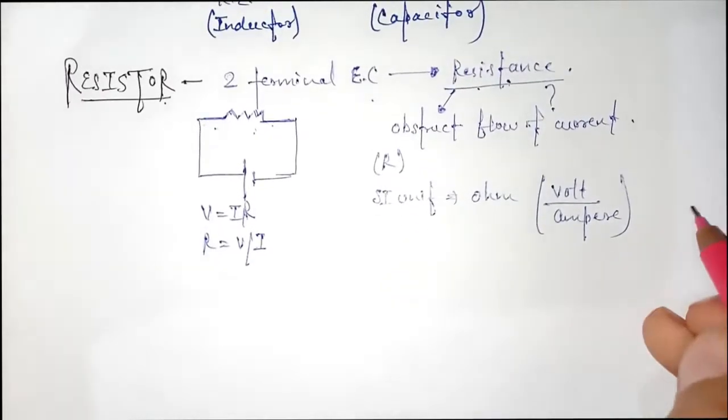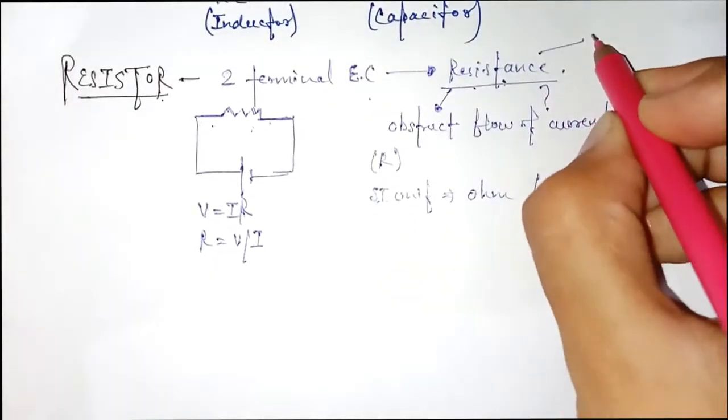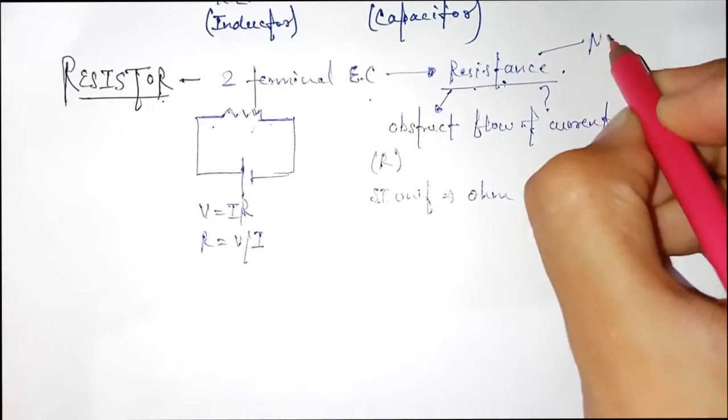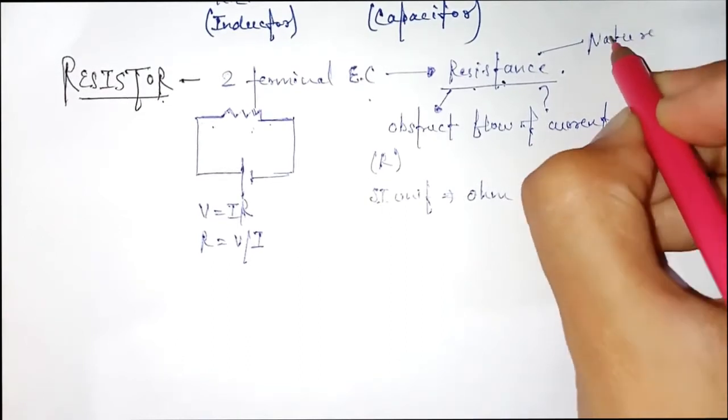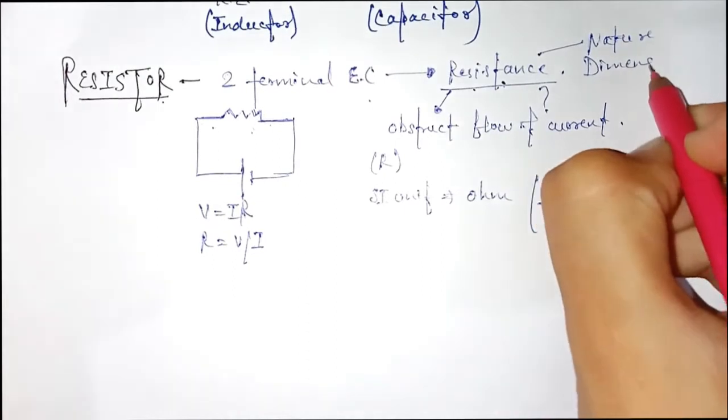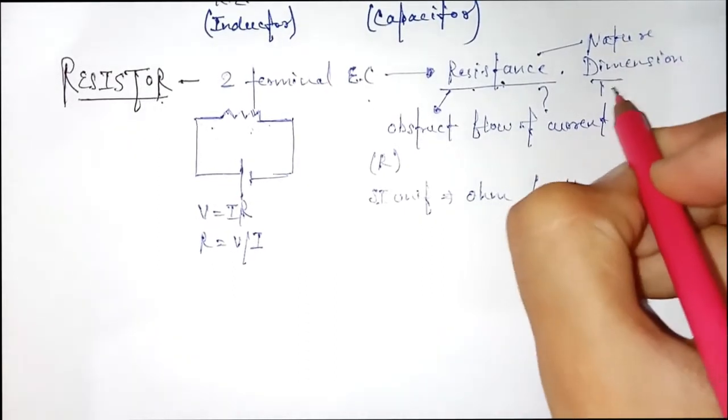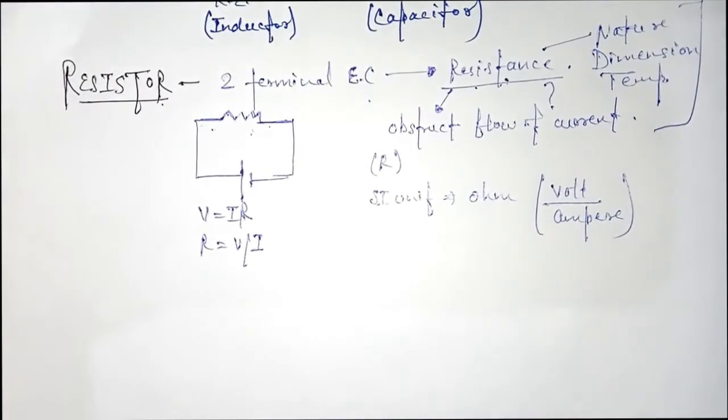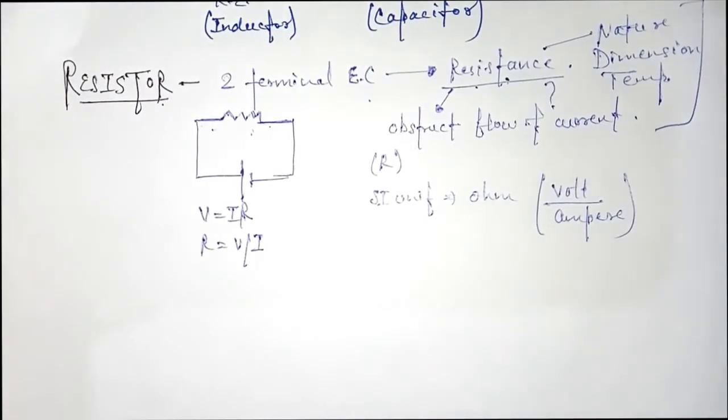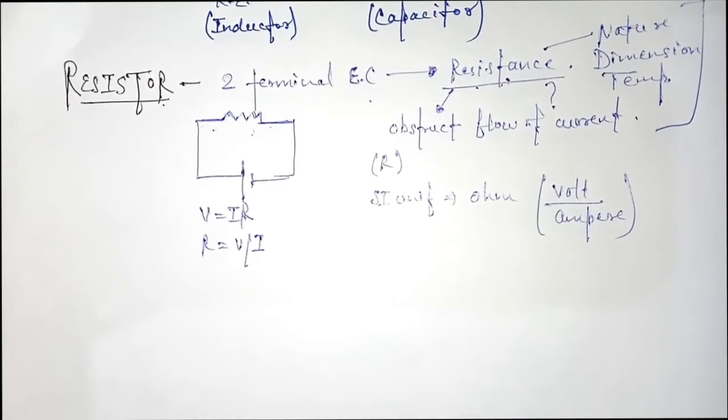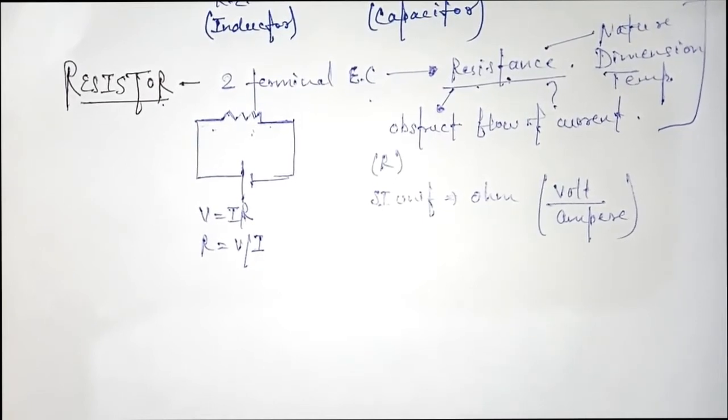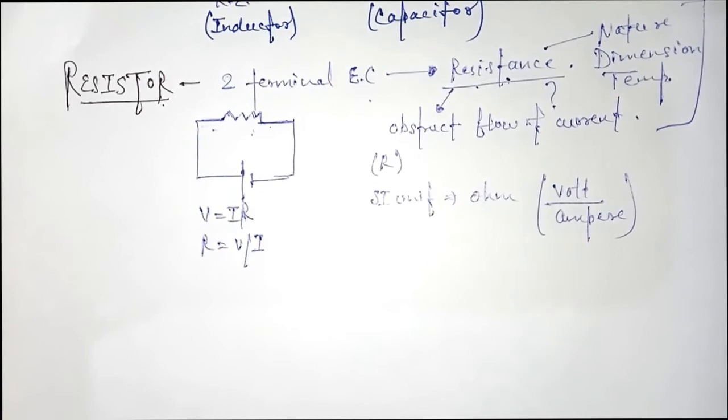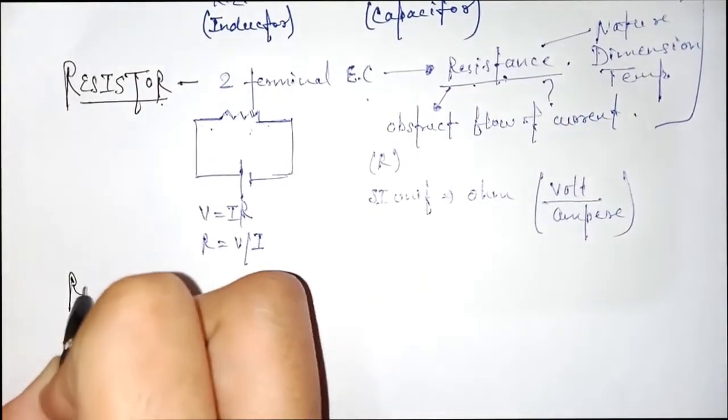Resistance depends on nature, dimension, and temperature of a conductor. Second term is resistivity. I think resistor is clear to you. Second is resistivity.